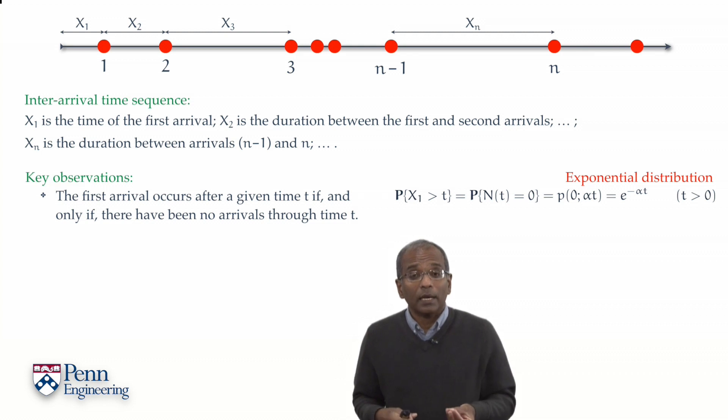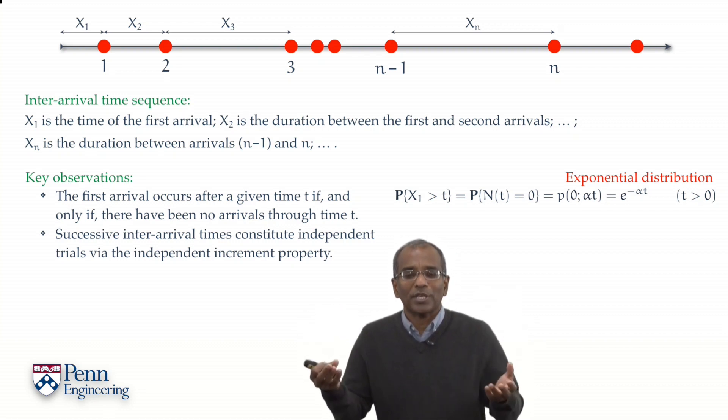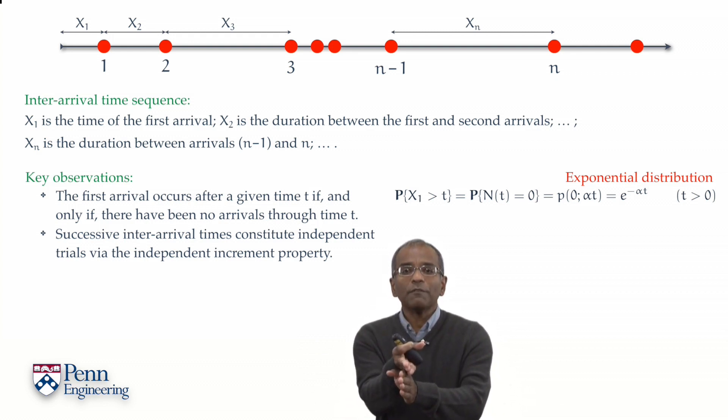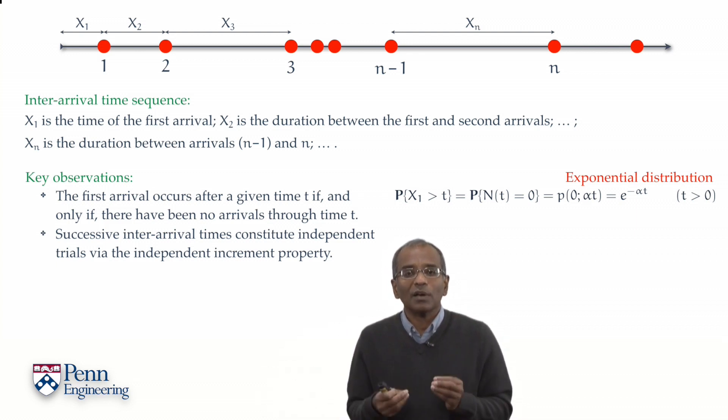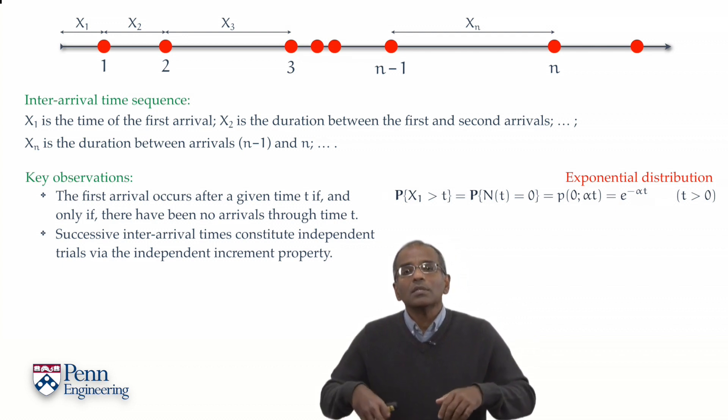And immediately into a lapse will fall this following idea: every arrival constitutes a renewal of the process. It's as if we've begun anew. And therefore, the time between the first and second arrivals has the same distribution as the time of the first arrival. It's exponentially distributed with the same parameter alpha. And the moment a second arrival comes into place, the third arrival is independent of the first two, and the inter-arrival time x₃ has the same distribution as x₁ and x₂, and so forth.